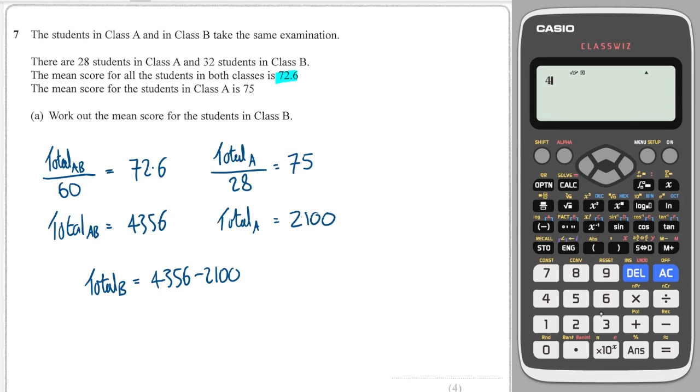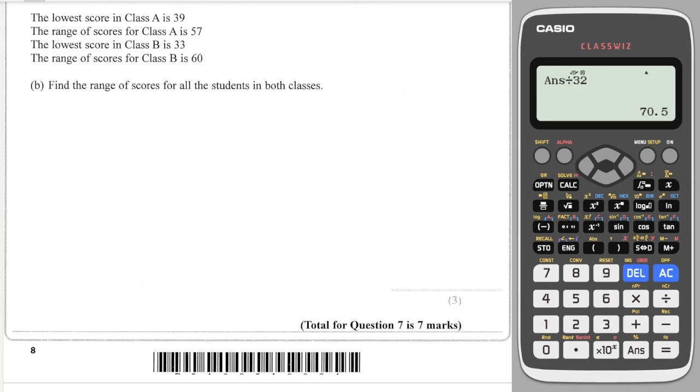And that gives me 2256. So the mean in Class B is the total they scored divided by the number of students, which is 32. So I divide this by 32 and I get 70.5, and we're done.